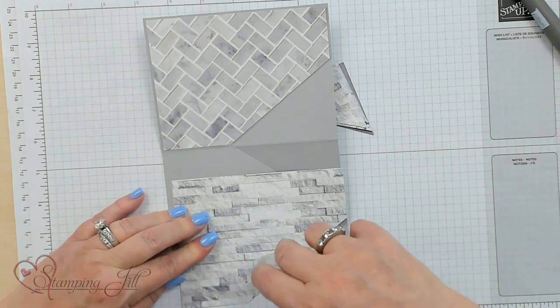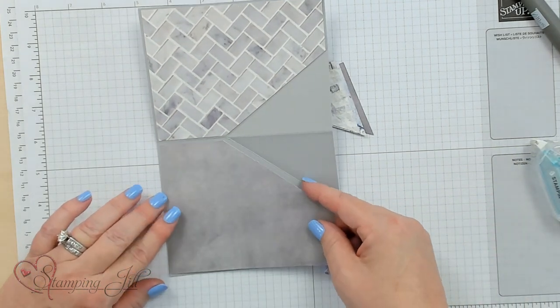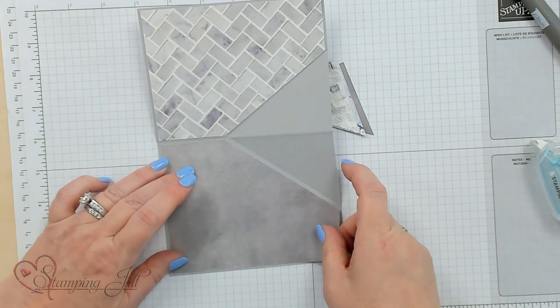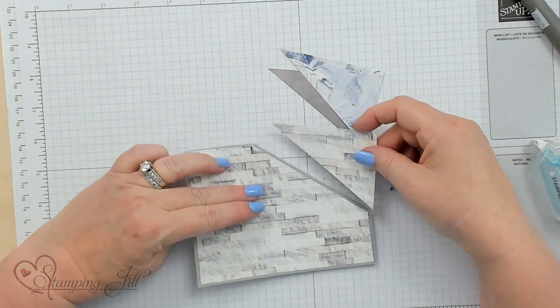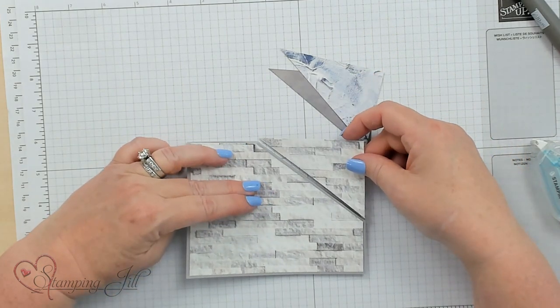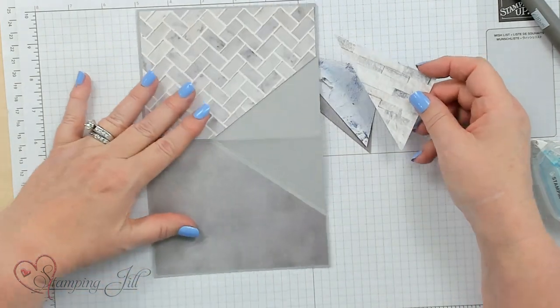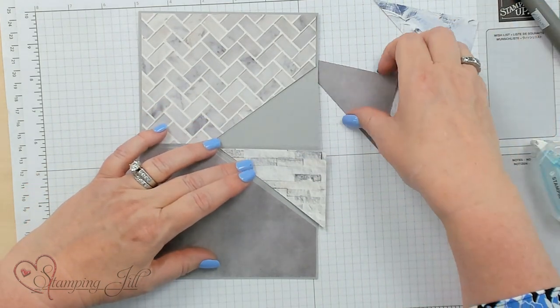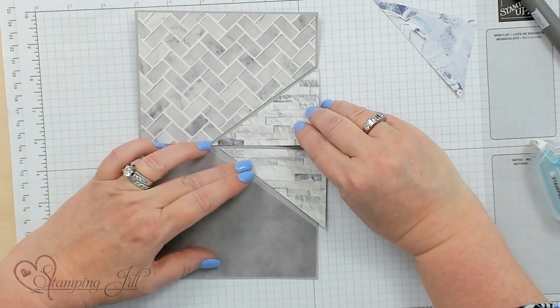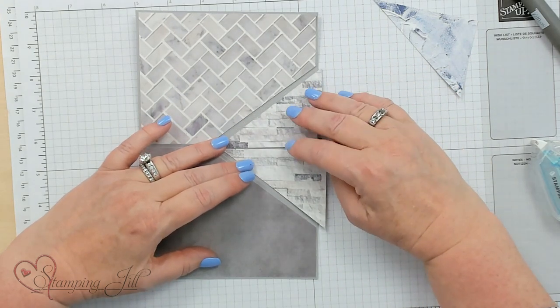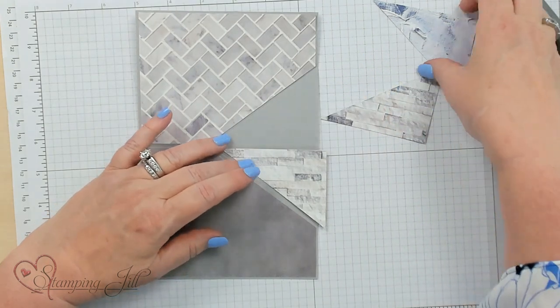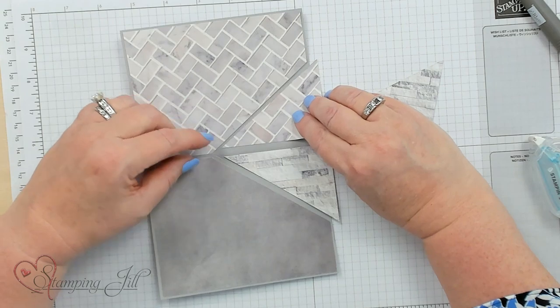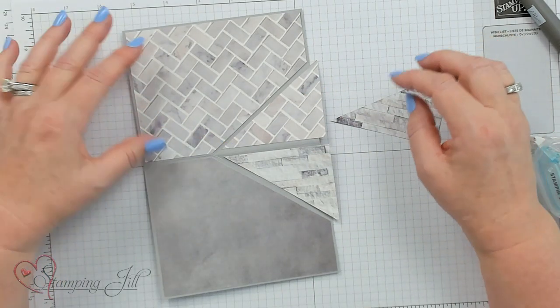You can stamp on this now before you actually adhere it, but for the sake of time I'm going to go ahead and adhere it down. This piece normally goes here, but I can take this piece and put it right here for interest. You can switch these things around if you want to. Maybe that one so those two match, or do this if I want them to be different. You can decide.